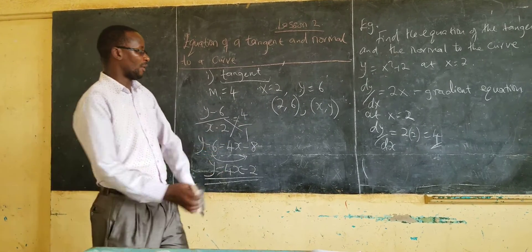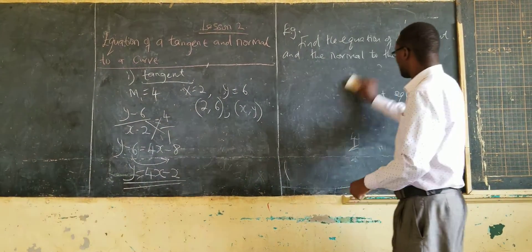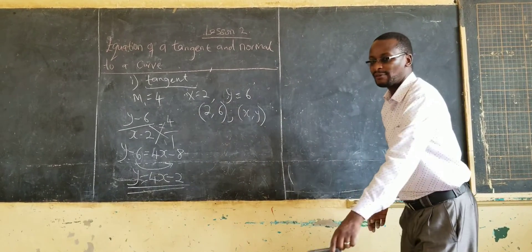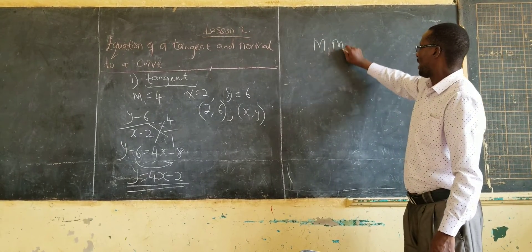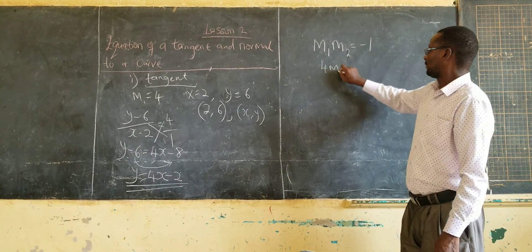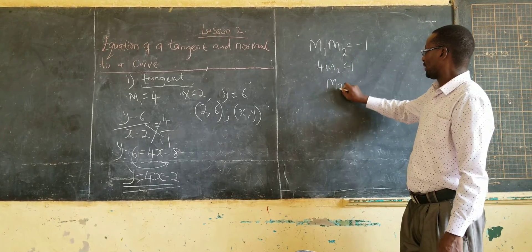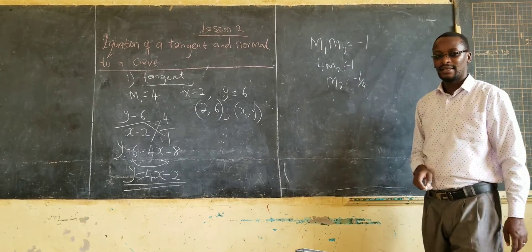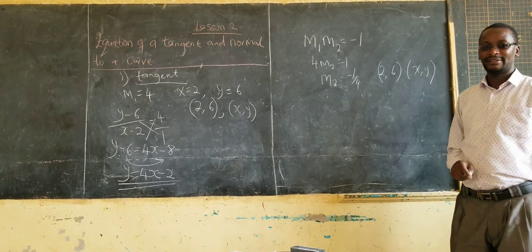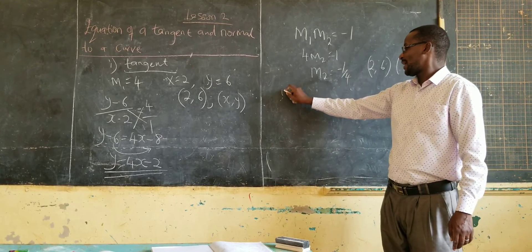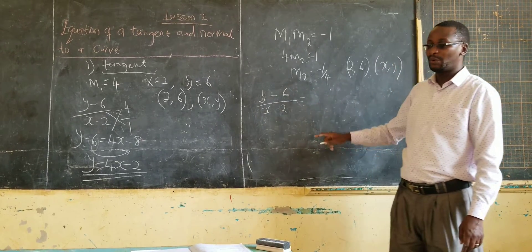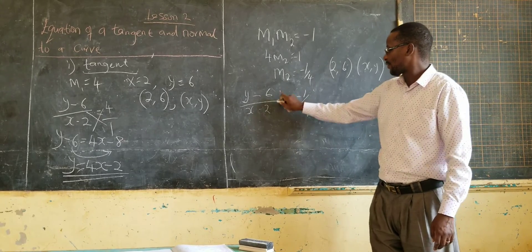Let's go ahead and get the equation of the normal. When we are getting the equation of the normal, we don't need to differentiate again because we have already differentiated. All we have to do is to get m2, and remember m1 times m2 equals negative 1. Our m1 is 4, and so m2 is equal to negative 1 over 4.